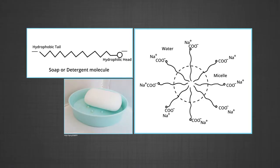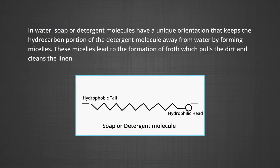Another interesting method of beneficiation of ore is the froth flotation method. Before explaining this process, let us recall the cleaning action of soap. A soap molecule is a long chain fatty acid; it has a hydrophobic tail and a hydrophilic head. In water, soap or detergent molecules have a unique orientation that keeps the hydrocarbon portion away from water, forming micelles. These micelles lead to the formation of froth, which pulls the dirt and cleans the linen.